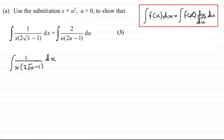When doing substitution we need to work out dx by du. Our substitution is x equals u squared, so we differentiate this with respect to u. Therefore, dx by du equals 2u.